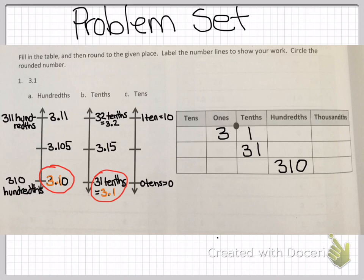Now we're looking at the tens line. We know our number will fit in between one ten, which is equal to ten, and zero tens, which is zero. The midpoint between ten and zero is going to be five. Our number fits right about there — three and one tenth. So now let's see which ten it will round to. It will round down to zero tens, or zero.